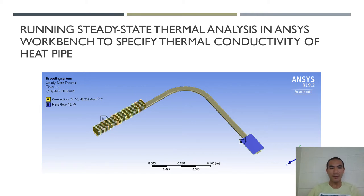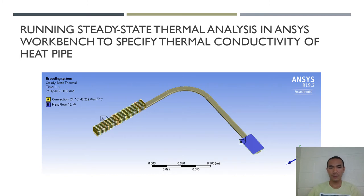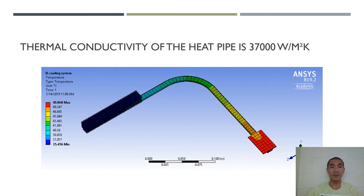The simulation I ran with the entire cooling system uses a convection coefficient of about 43 watts per meter squared K, at a surrounding temperature of 24 degrees Celsius, with a heat flow of 15 watts flowing into the CPU package. By using the optimization tool inside ANSYS Workbench, I found the heat pipe thermal conductivity is about 37,000 watts per meter squared K. In industry, heat pipe designers typically target a thermal conductivity of about 20,000 to 40,000.